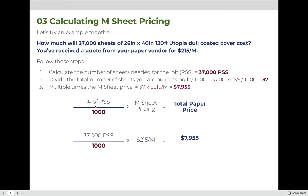The formula is: number of press sheets divided by 1,000, times the M-sheet price, equals the total cost of the paper. In this case: 37,000 divided by 1,000 is 37, times $215 per M, gives us $7,955 as the total cost of all those sheets of paper.